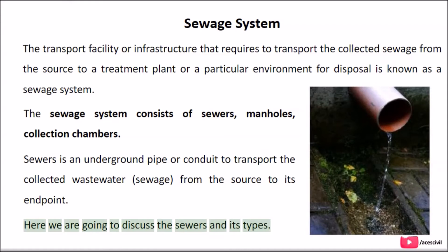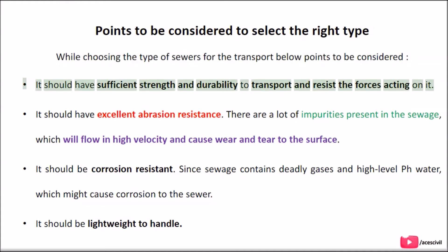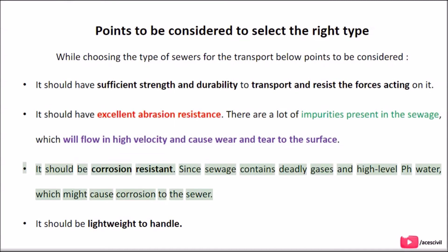Here we are going to discuss the sewers and their types. While choosing the type of sewers for transport, the following points should be considered: it should have sufficient strength and durability to transport and resist the forces acting on it; it should have excellent abrasion resistance, as impurities present in the sewage flow at high velocity and cause wear and tear to the surface; it should be corrosion resistant, since sewage contains deadly gases and high-level pH water which might cause corrosion; and it should be lightweight to handle.